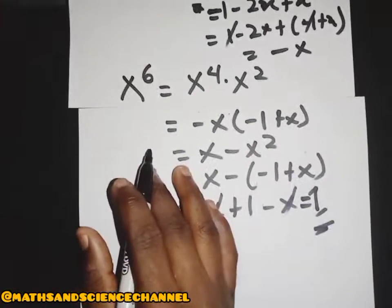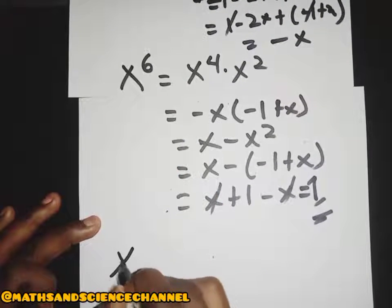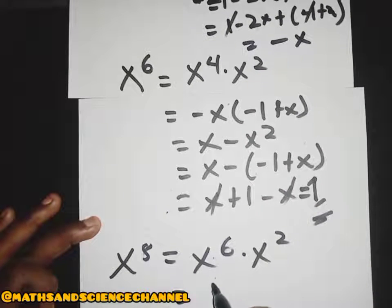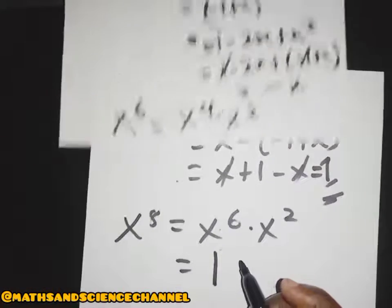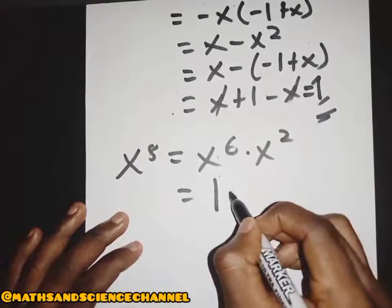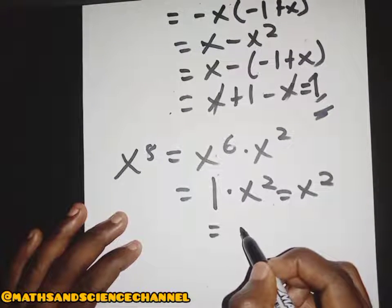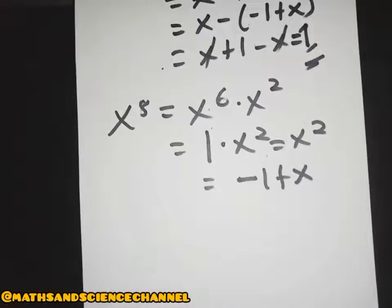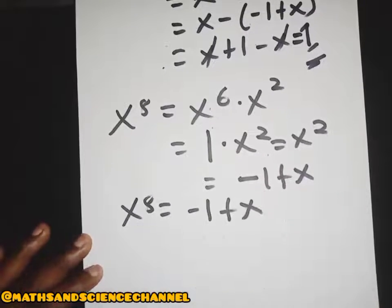Since s to the power of 6 equals 1, what about s to the power of 8? s to the power of 8 is just s to the power of 6 multiplied by s to the power of 2. s to the power of 6 is 1, multiplied by s squared, which is negative 1 plus x. So s to the power of 8 equals negative 1 plus x, or x minus 1.